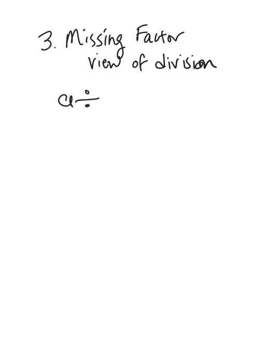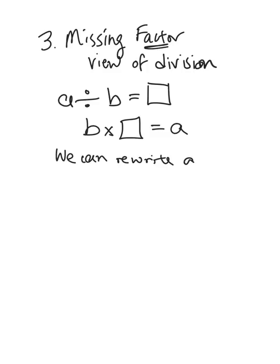With a missing factor view, if you have something like a divided by b equals something, then we could rearrange this division statement to become a multiplication statement. Notice the word factor is one of those multiplication vocabulary words, so b times that missing number, that answer, is a. So what the missing factor view of division says is we can rewrite a division statement as a multiplication statement.